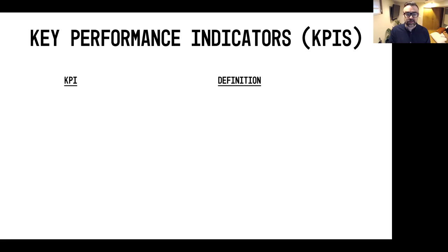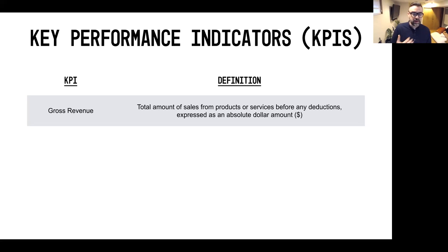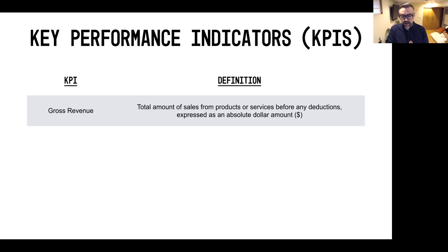So let's start with some quick definitions. The first definition would be around gross revenue. Think of that as really the total amount if you took all of the sales of all your products and services before you took anything away — any deductions, any costs — and it's usually expressed as an absolute dollar value. So if you did $1 million in sales, that's the top line revenue.